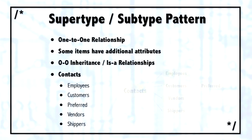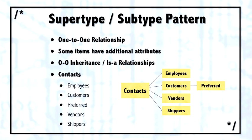The third pattern I want to show you is the supertype-subtype pattern. The supertype-subtype pattern is useful when you have a situation where it's difficult to decide whether you want to put everything together in one entity or separate it out into multiple different entities. For example, in this diagram, there are certain attributes or columns that are going to be common to employees, customers, vendors, and shippers.